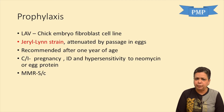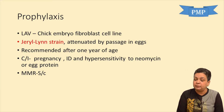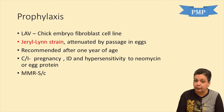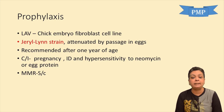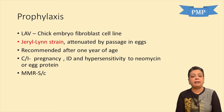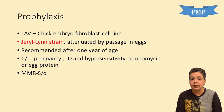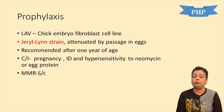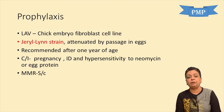Moving on to treatment: there is no specific antiviral therapy for mumps. Prophylaxis is done by giving a live attenuated vaccine grown in chick embryo fibroblast cell lines. The strain used is the Jeryl Lynn strain, attenuated by passage in eggs and then grown in chick embryo fibroblast. This vaccine is recommended after one year of age. Contraindications include pregnancy, immunodeficiencies, and hypersensitivity to neomycin or egg protein. It is generally given in combination with measles and rubella as the MMR vaccine, administered subcutaneously.